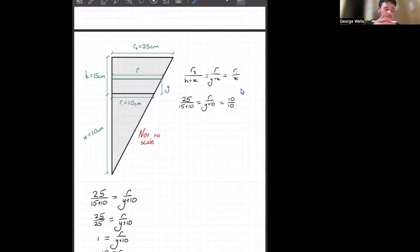So once again, this is like a cross-section of our cone and frustum. And we know using similar triangles that r2 over h plus x should be the same as r over y plus x,